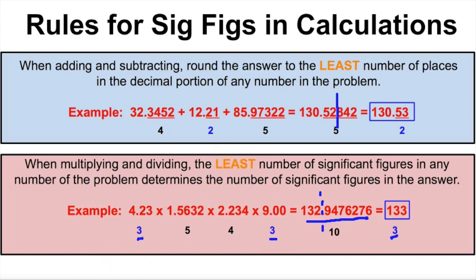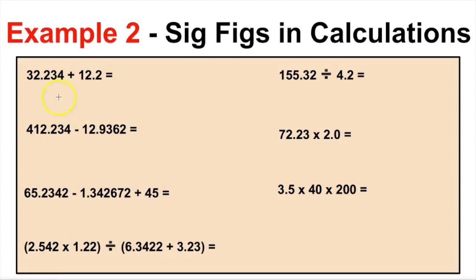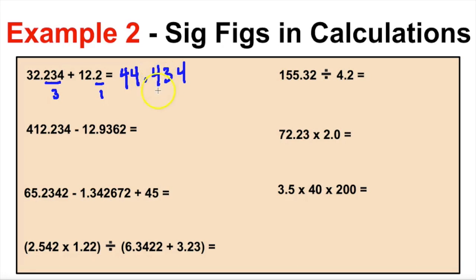Let's apply these rules. Adding 32.232 and 12.2: the sum is 44.434, but this is incorrect if left as is. The first number has three decimal places and the second has only one, so our answer can only have one decimal place. The second decimal is three — four or less, let it rest — so the final answer is 44.4.